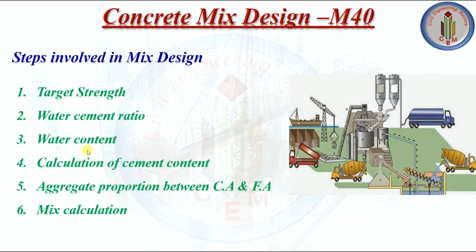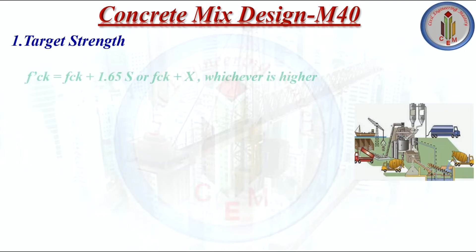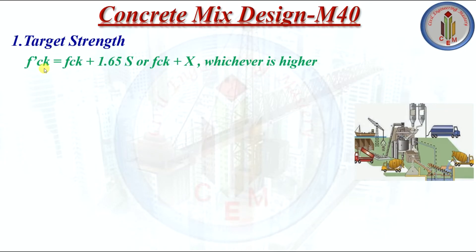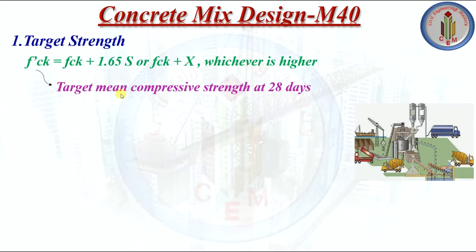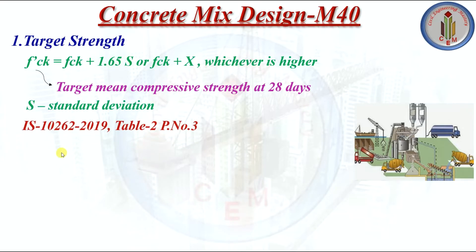Step 1 is target strength. The formula is: f'ck = fck + 1.65s  OR  fck + x — whichever is higher. Here f'ck is the target mean compressive strength at 28 days and s is the standard deviation. As per IS 10262:2019 Table 2, for M40 grade concrete the standard deviation s = 5 N/mm². From Table 1, the factor x for M40 grade is 6.5 N/mm².